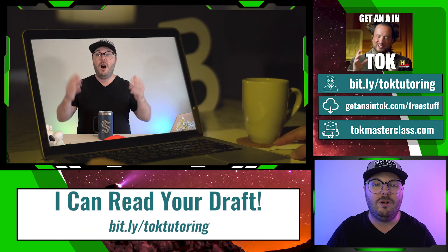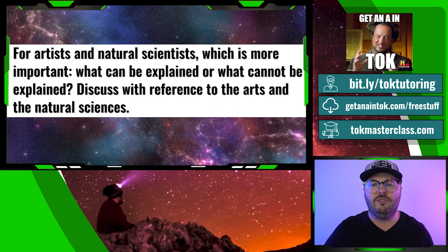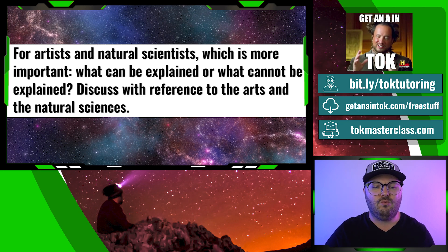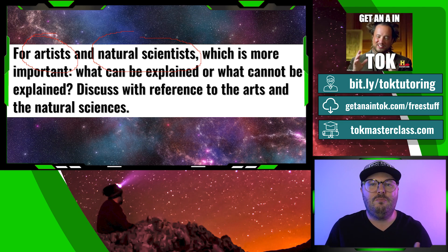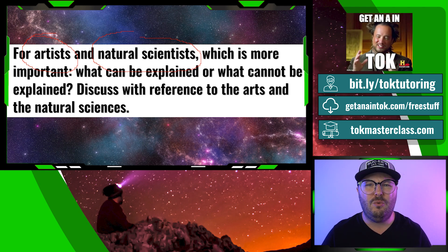Let's check out prompt number two. It's so good. For artists and natural scientists, which is more important: what can be explained or what cannot be explained? Discuss with reference to the arts and the natural sciences. This is a really interesting idea. One of the reasons I feel this is going to be one of the most popular is because it's requiring both AOKs. This is telling you two of the AOKs right here, and if you don't know which prompt to choose, choose this. It's so easy.